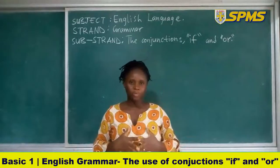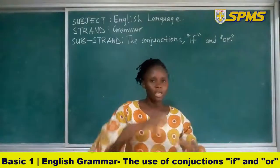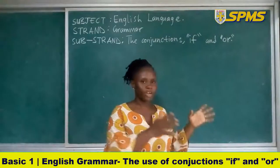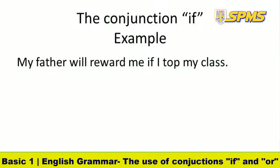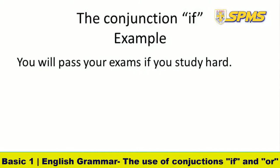Let me give you another example to clarify: my father will reward me if I top my class. So there is a condition — if you don't top your class, your father will not reward you, but if you top the class, your father will reward you. The conjunction 'if' is based on conditions. Another example: you will pass your exams if you study hard.